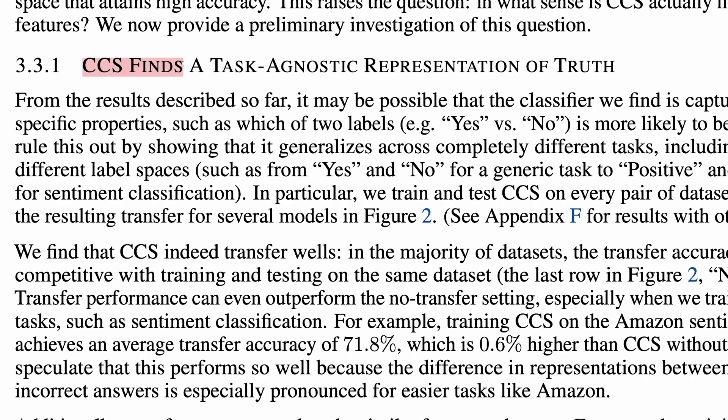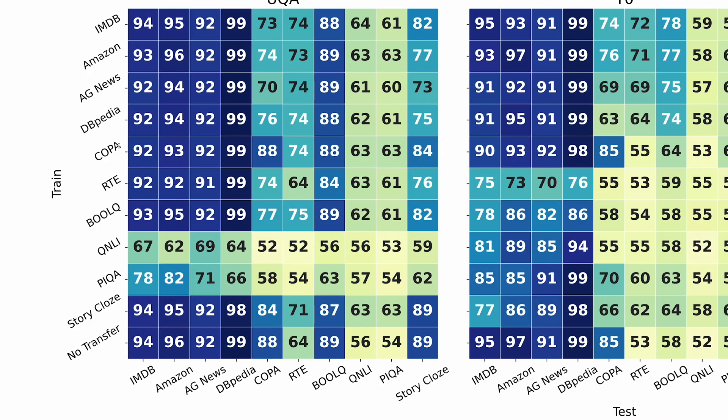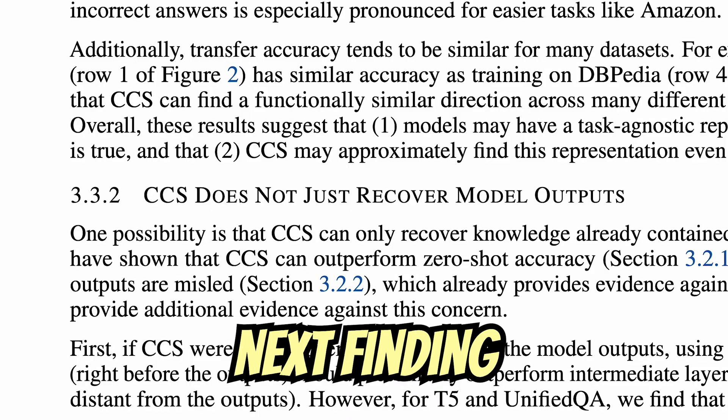First, they observe that CCS finds a task-agnostic representation of truth. For most datasets, they find that they can train on one, and test on another, and get relatively similar performance to training and testing on the same dataset. This suggests that CCS is not just picking up on dataset-specific details. Great, next finding.